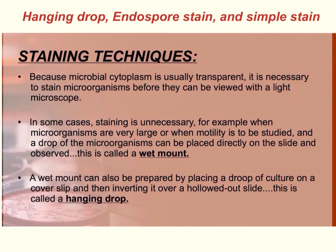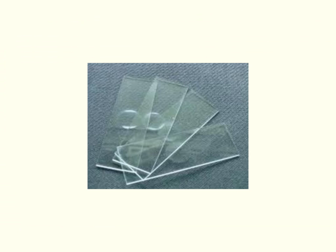A wet mount can also be prepared by placing drops of culture on a cover slip and inverting it over a hollowed out slide — this is called a hanging drop. Here is what those hollowed out slides look like; they are used for making hanging drops.